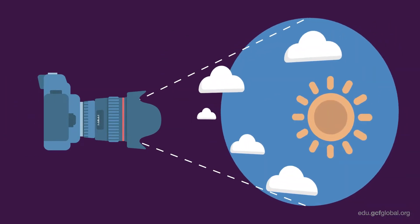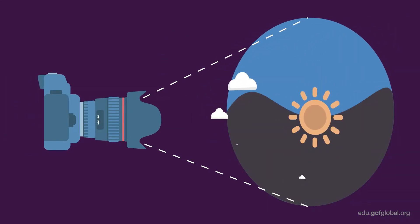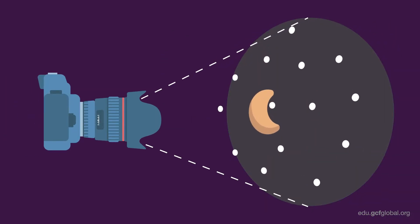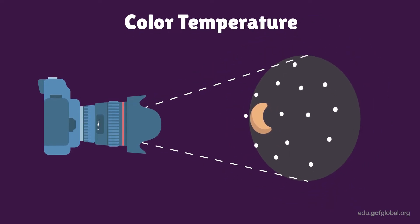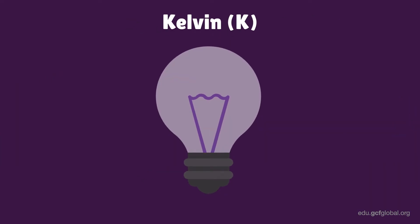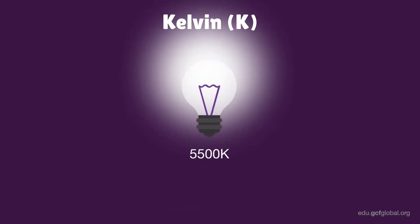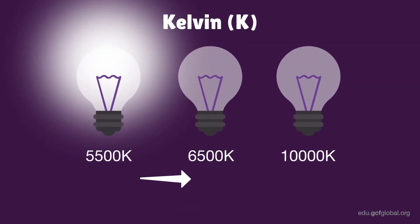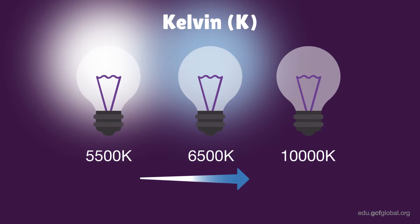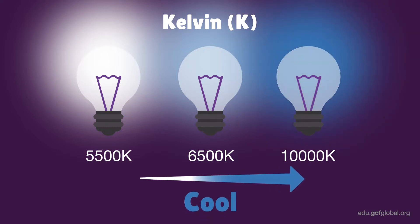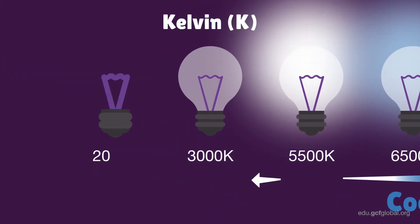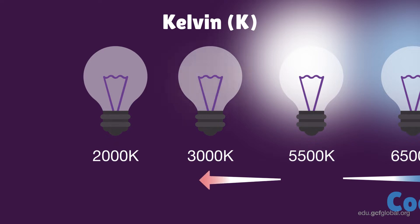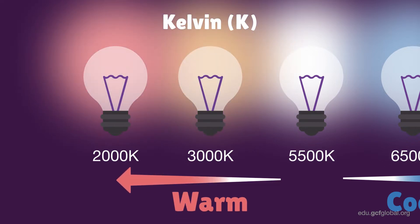Cameras capture colors according to the available light, and they can be changed by adjusting the color temperature. Color temperature uses Kelvin to measure the light of any given scene. Light with a higher color temperature will translate to more bluish, cooler tones, while a lower color temperature translates into more reddish, warm tones.